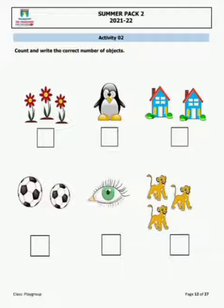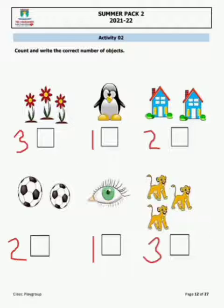Now come to the next page: 'Count and write the correct number of objects.' ہم نے ادھر بھی objects کو count کرنا ہے۔ جیسے یہ flowers ہیں — how many flowers are there? One, two, three. Now we will write in the box: 3. آپ نے box کے اندر number لکھنا ہے۔